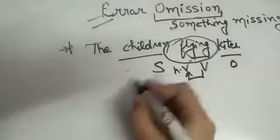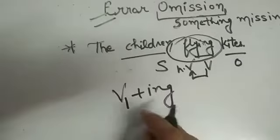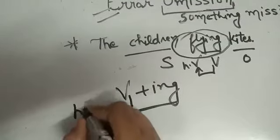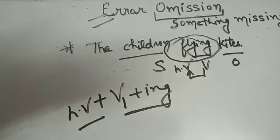Flying. It is first form plus ing. And we know first form plus ing can't be used without helping verb. Before first form plus ing always we use helping verb.